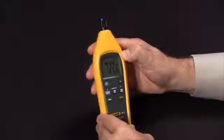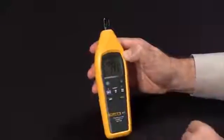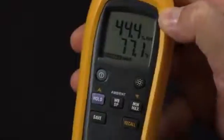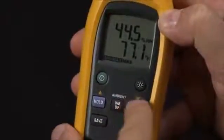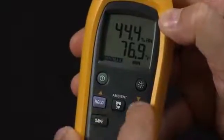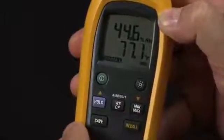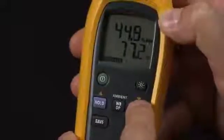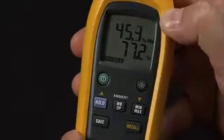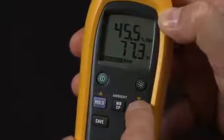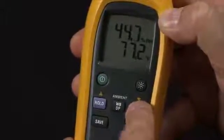We do have a min-max feature on the 971 as well. Simply press this button. You will have your min-max reading on the screen and to sequence through, press the button once to get your minimum reading, press it once again to get your average, and once again to get your maximum reading. To exit this mode and go back to a live measurement, simply hold the min-max button down and you are now back to a live measurement.